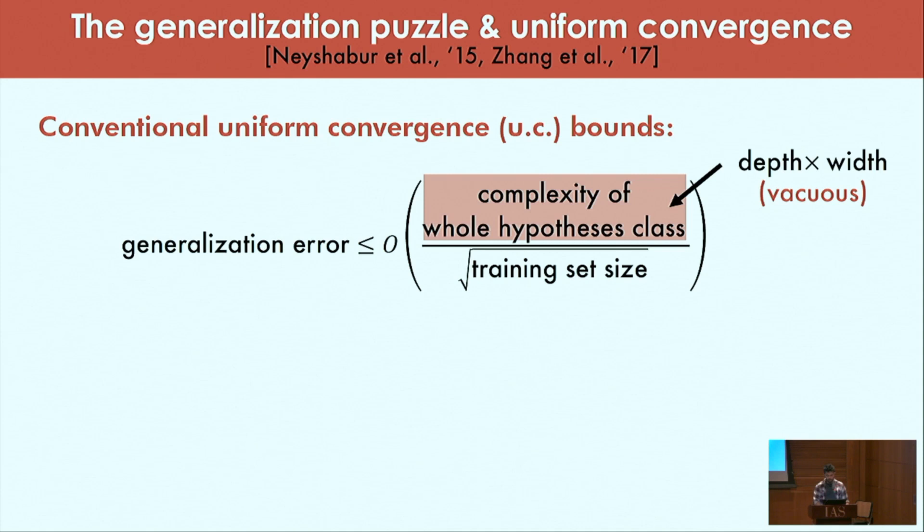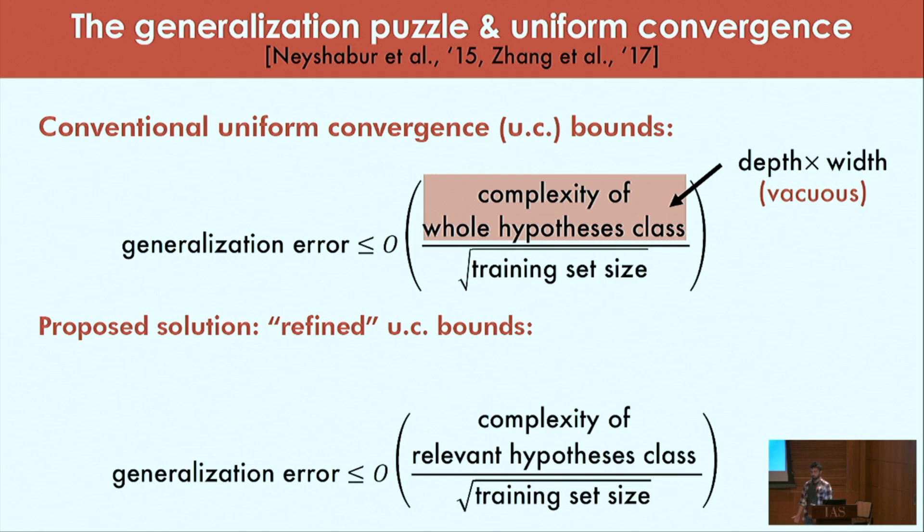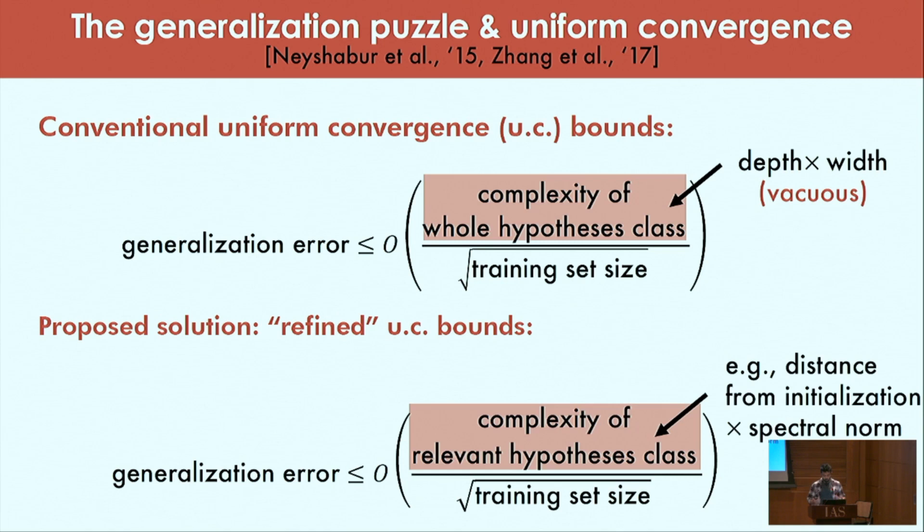These papers from a few years back proposed a solution to address this, which was to refine these uniform convergence bounds by incorporating information about the algorithm and the data distribution. If you know what sort of implicit regularization is happening, you can encode them and apply uniform convergence on a smaller class of hypothesis. The hope was that this would yield a tighter bound by depending on weight norms of the network.